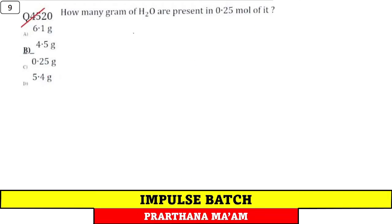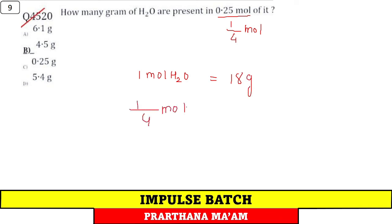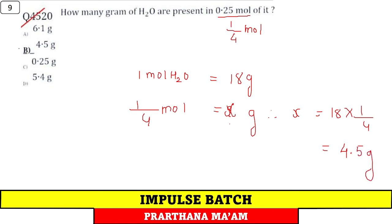Question 9: How many grams of H₂O are present in 0.25 mol? 1 mol water = 18 g. So 0.25 mol = 18 × 0.25 = 4.5 g. Option: 4.5 g.